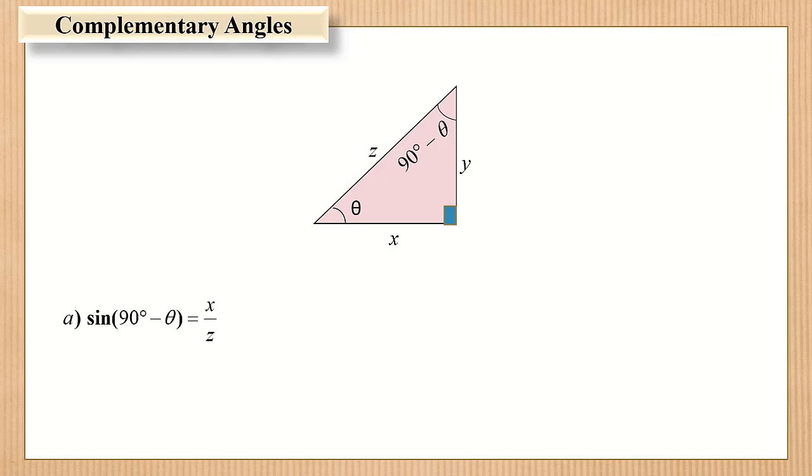We notice that sine of 90 degrees minus theta equals x over z, and cosine theta also equals x over z. Therefore, sine of 90 degrees minus theta is equivalent to cosine theta.